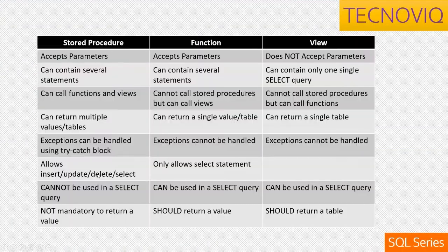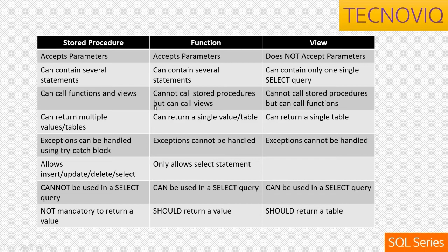As seen in the examples: stored procedures and functions can accept parameters, but views cannot. Stored procedures can contain several statements in the body; similarly functions can, but a view can only have one single SELECT statement. A stored procedure can call functions and views. A function cannot call stored procedures but can call views. A view cannot call stored procedures but can call functions. Stored procedures can return multiple values or tables; a function returns a single value or single table; a view returns only a single table.